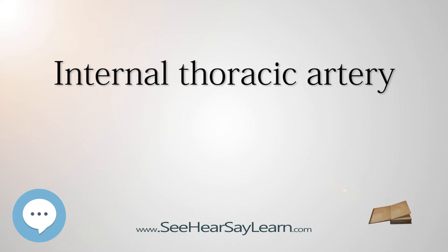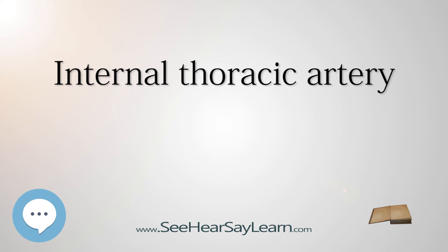Branches: Mediastinal branches include thymic branches and the pericardiacophrenic artery, which travels with the phrenic nerve. Sternal branches and perforating branches are also present. In a given intercostal space, the upper branch travels laterally along the bottom of the rib until it anastomoses with its corresponding posterior intercostal artery. The lower branch of the space anastomoses with a collateral branch of the posterior intercostal artery.